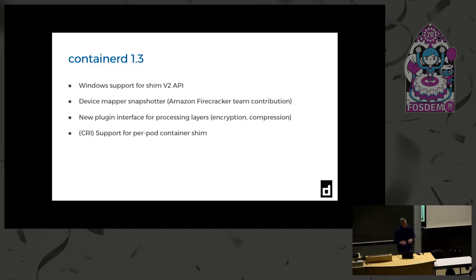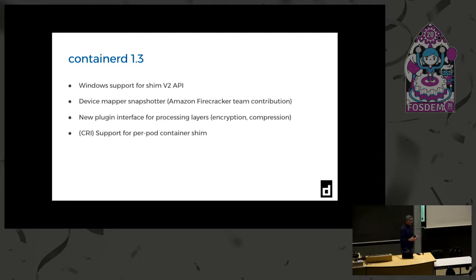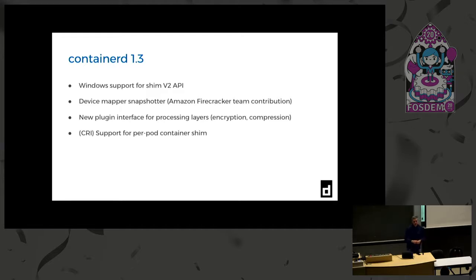Our most recent release, containerd 1.3, added Windows support for the shim v2 API. The Amazon Firecracker team contributed a device mapper snapshotter, which we've actually accepted into the project. There's also a new plugin interface for things like image encryption or special compression modes - you don't have to modify containerd code to use these capabilities, you can use a separate plugin binary.